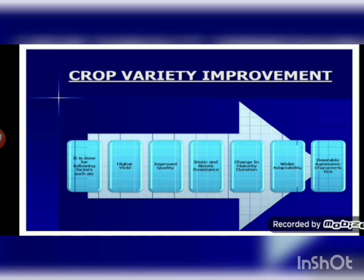Change in maturity duration: the time period between when a seed is sown and when the crop is harvested is known as maturity duration. A longer maturity duration means farmers have to pay more attention and spend more time and money on the crop. If the maturity duration is shorter, it is beneficial for the farmer — on the same piece of land in one year they can grow more crops, increasing both income and production.